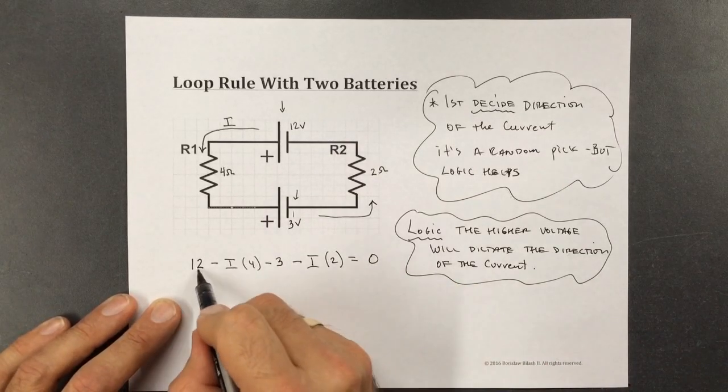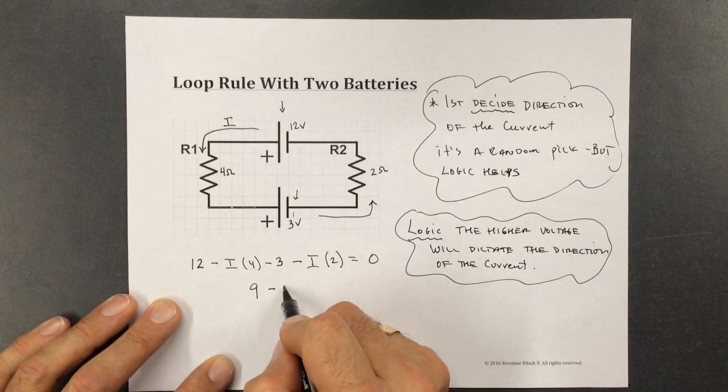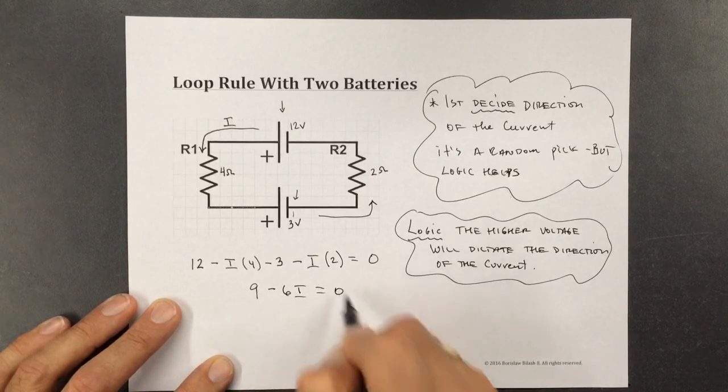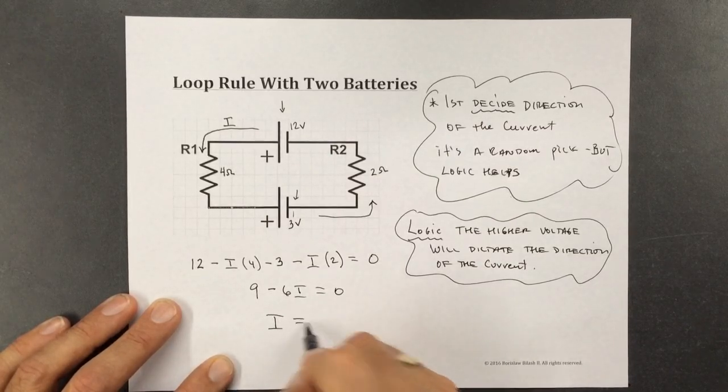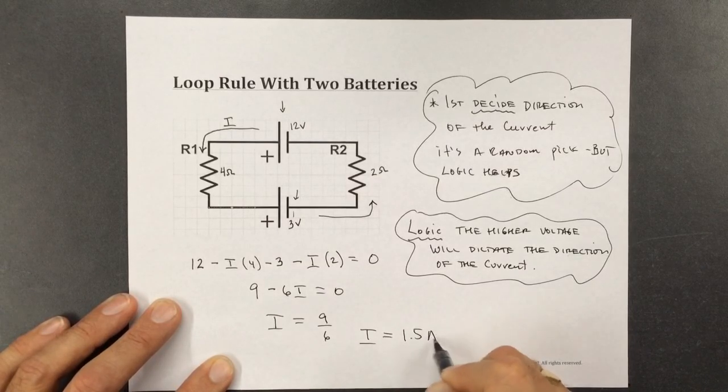So if we simplify this, 12 minus 3 is going to be 9, minus 6I is equal to 0. So I is going to be equal to 9 over 6, or I is going to be equal to 1.5 amps.